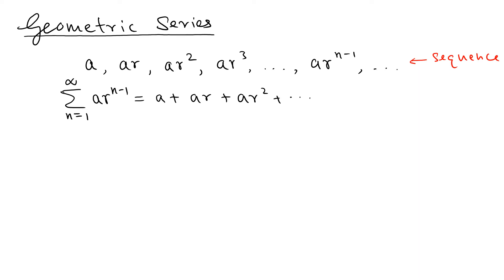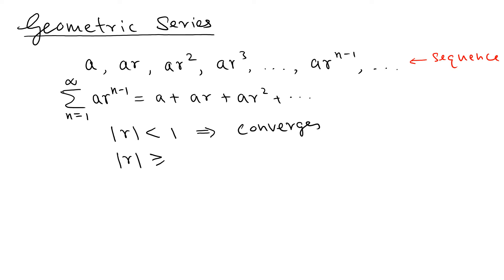The question is when this series is going to converge. We know that the geometric series converges when the absolute value of r is less than 1. Conversely, if the absolute value of r is greater than or equal to 1, the series is going to diverge.